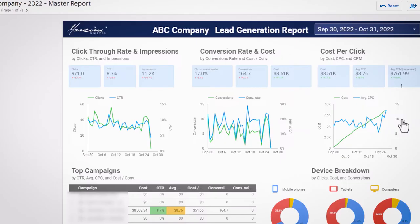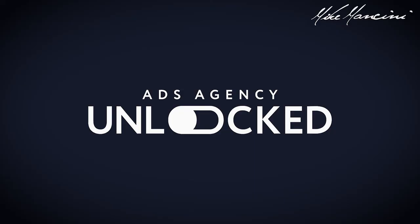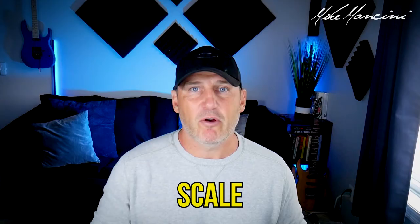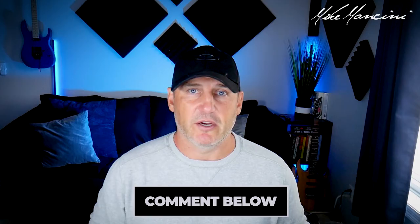If you'd like a report like this for your clients, this is just one of the many templates I include for my students inside my course called Ads Agency Unlocked, where I show students how to start a Google Ads agency from scratch or scale their existing agencies. I share everything I've done to start, build, and scale my agency — there's a link in the description below. What kind of reporting do you use for your agency, or do you use any at all? Let me know in the comments below.